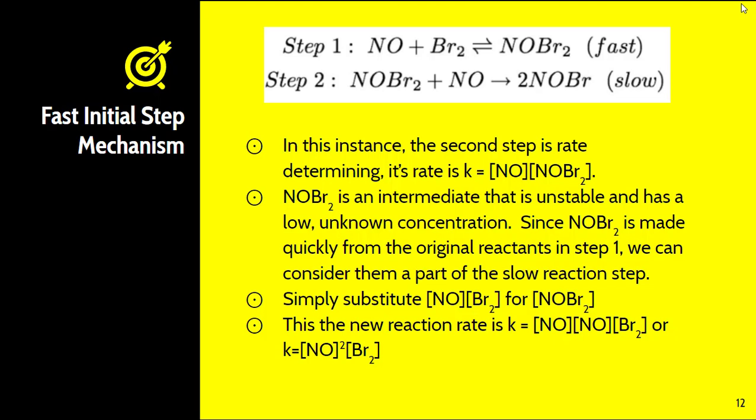After substituting, the new reaction rate is k times the concentration of NO times the concentration of NO times the concentration of Br2. Simplifying, this gives k times the concentration of NO squared times the concentration of Br2. When the first step is fast, we take those reactants and substitute them in for the intermediate found in step two.